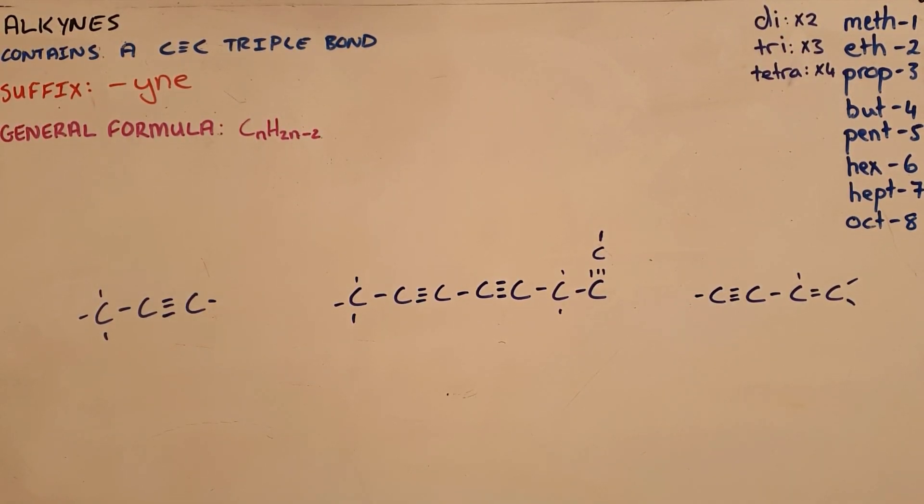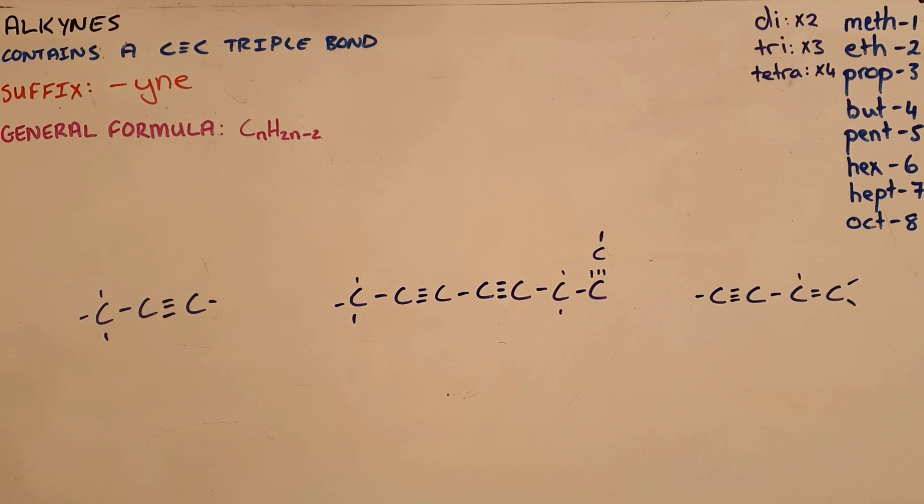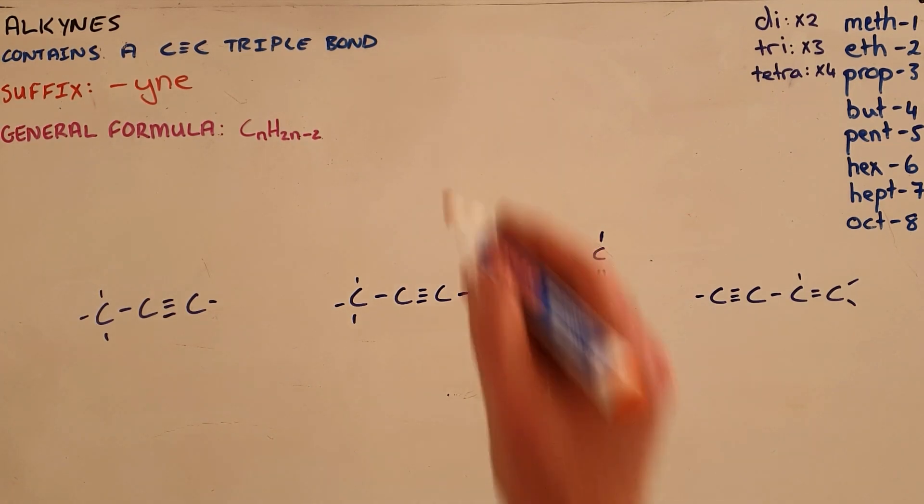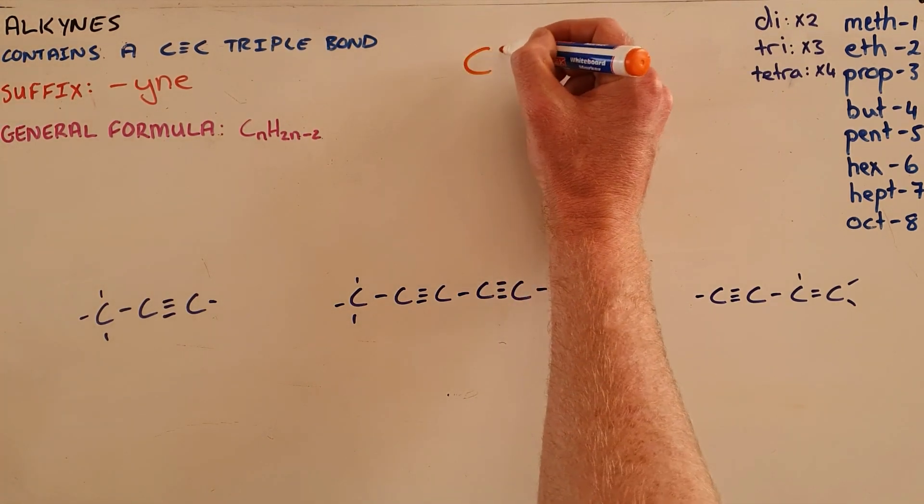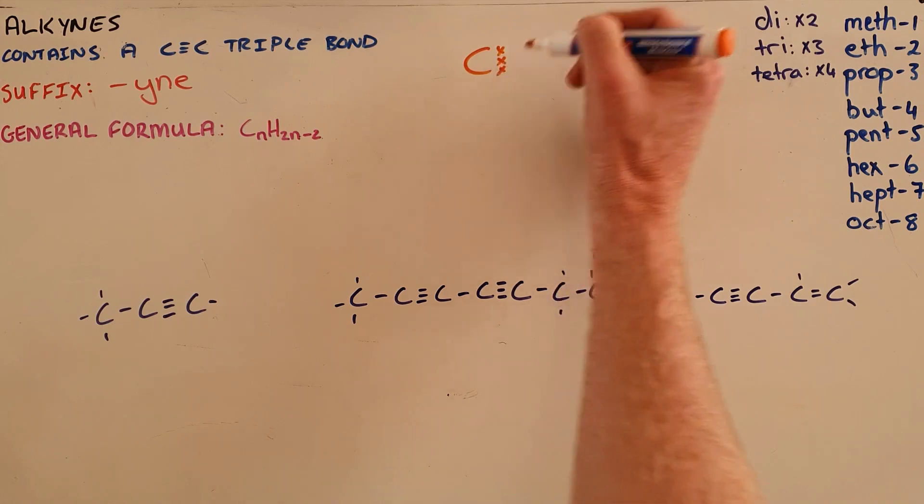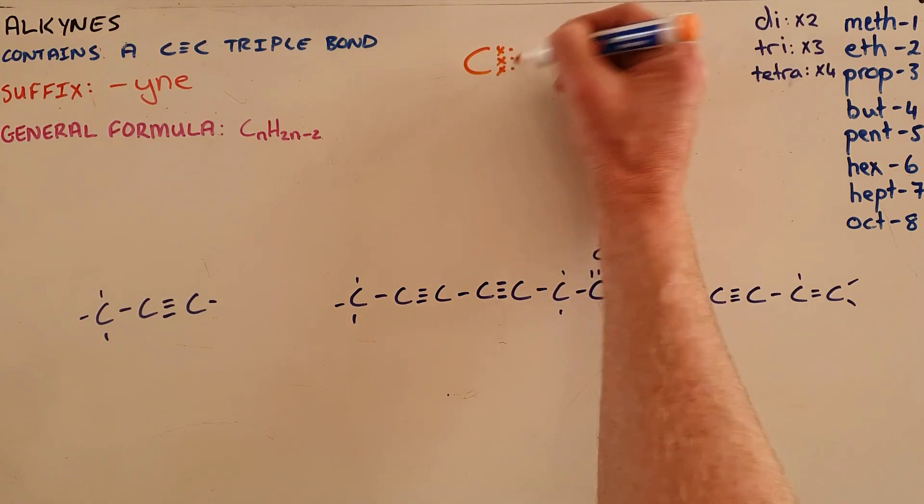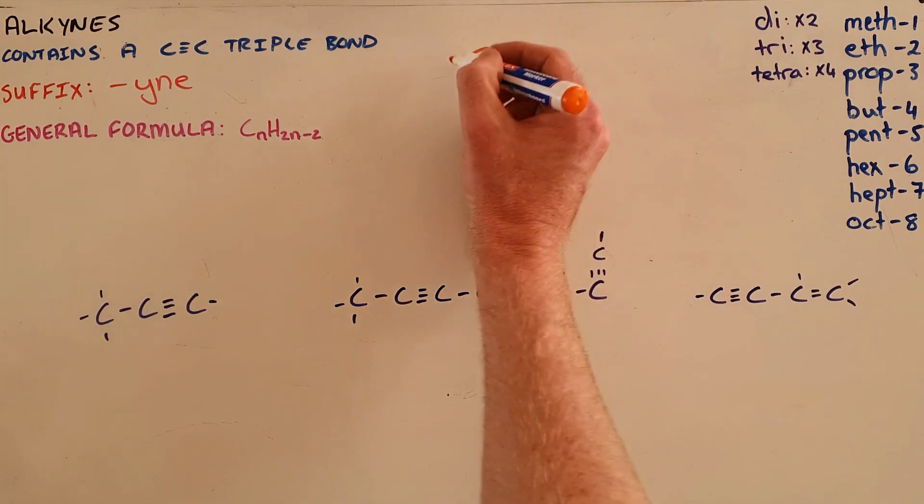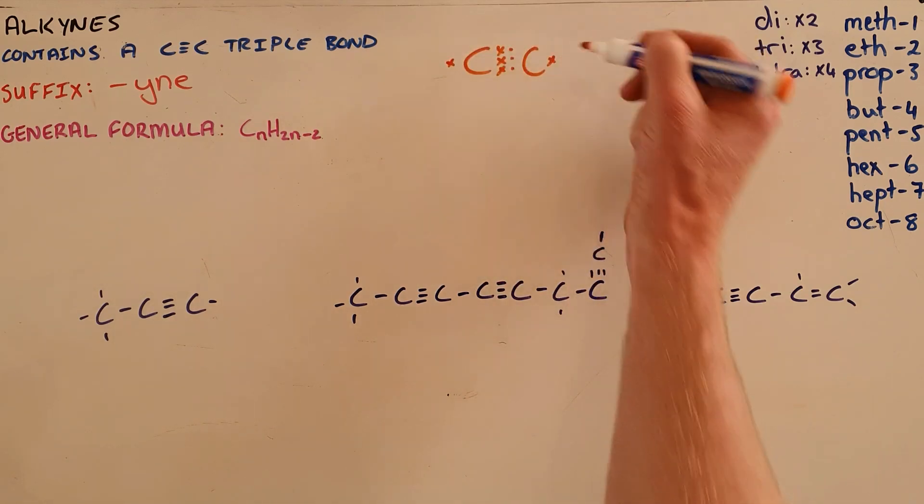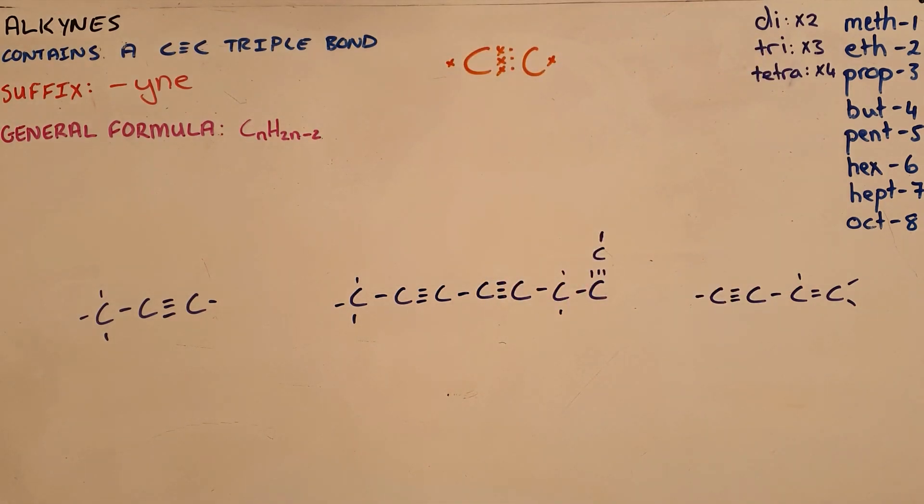Alkynes are organic compounds that contain at least one carbon-carbon triple bond. A triple bond refers to a bond between two carbon atoms where each atom donates three electrons, and as a result three bonds are formed between those atoms. Alkynes get the suffix -yne and have the general formula CnH2n-2.